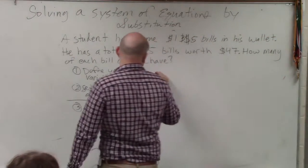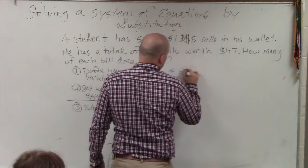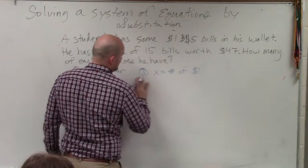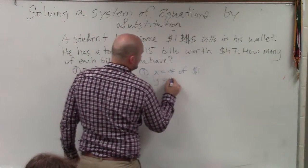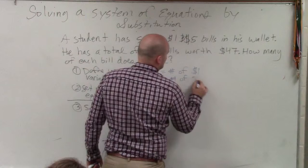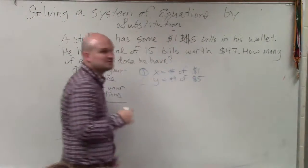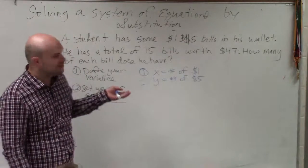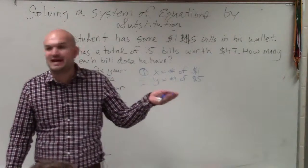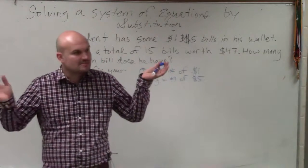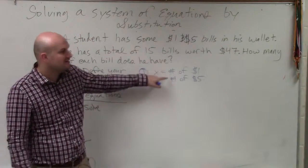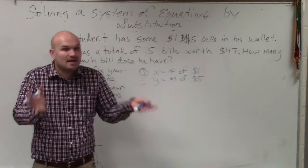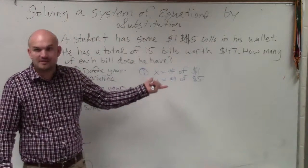So I'm going to say x equals the number of $1 bills, and y equals the number of $5 bills. You could have switched the x and y's. That's perfectly fine. You could use m and n, a and g, whatever. It doesn't matter what variables you use. As long as you understand they represent the number, they represent how many. So once we find that number, it's going to tell us how many of each. Does that make sense?